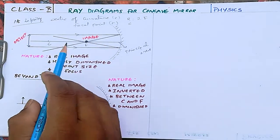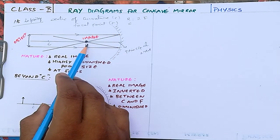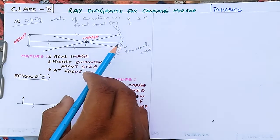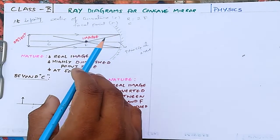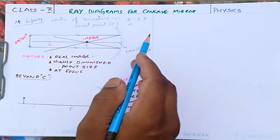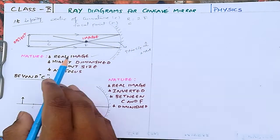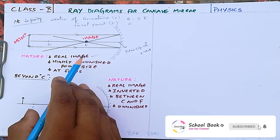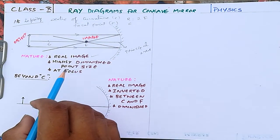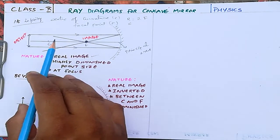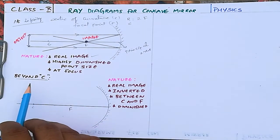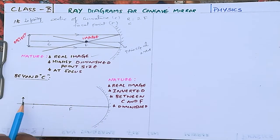The image formed at focus is a real image because it appears in front of the mirror. If it appeared behind the mirror, it would be a virtual image. The image is real, highly diminished — in fact, point-sized, appearing just like a point at the focus.